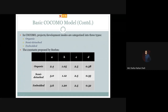For Organic projects: a = 2.4, b = 1.05, c = 2.5, d = 0.38. For Semi-Detached projects: a = 3.0, b = 1.12, c = 2.5, d = 0.35. For Embedded projects: a = 3.6, b = 1.20, c = 2.5, d = 0.32.